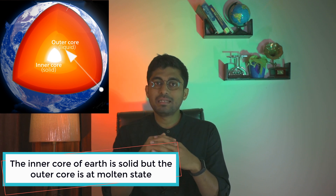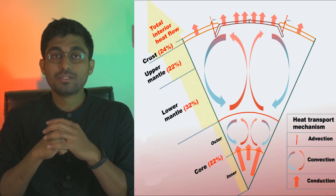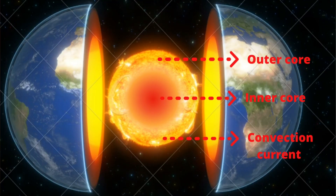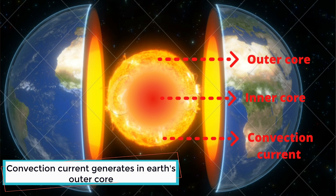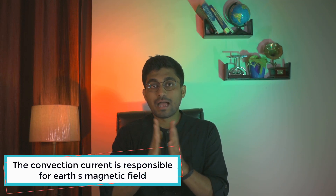The inner core and outer core have different characteristics. Both are composed of iron and nickel. The inner core is under huge pressure and exists in solid form, while the outer core is in a molten, liquid stage. The heat difference at the boundary between the inner and outer core drives a convection current, and this convection current is responsible for Earth's magnetic field.